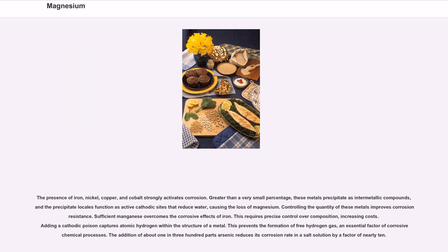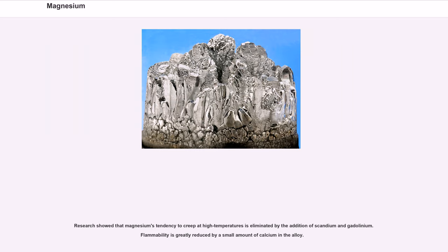This requires precise control over composition, increasing costs. Adding a cathodic poison captures atomic hydrogen within the structure of a metal, preventing the formation of free hydrogen gas, an essential factor of corrosive chemical processes. The addition of about 1 in 300 parts arsenic reduces its corrosion rate in a salt solution by a factor of nearly 10. Research showed that magnesium's tendency to creep at high temperatures is eliminated by the addition of scandium and gadolinium. Flammability is greatly reduced by a small amount of calcium in the alloy.